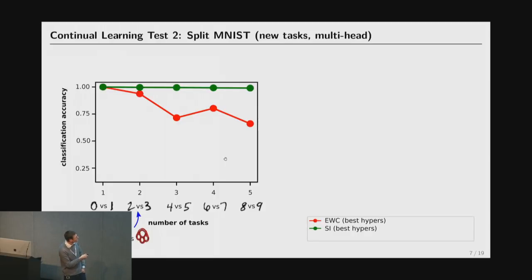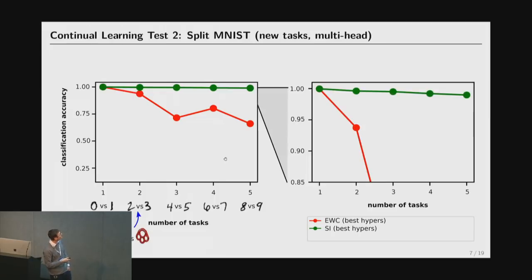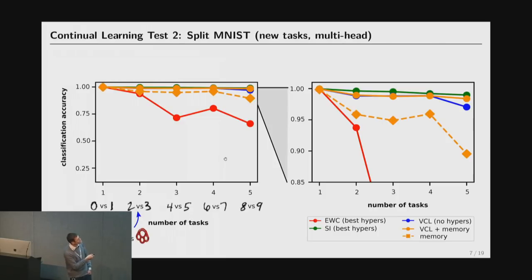Again, here is the elastic weight consolidation method and the synaptic intelligence. Synaptic intelligence is really good on this task, which is really interesting. It's quite an ad hoc method which comes from the neuroscience community. So one of the surprises is how well this does. EWC does not perform particularly well. I'm going to blow up this top region of this task versus classification accuracy plot so you can see the next methods. The variational continual learning does pretty well, not as good as synaptic intelligence and drops off towards the end, but still pretty good. If you add the memory, again, you can close the gap a little bit and this just shows you that the memory doesn't work particularly well by itself. So you need to combine it with this propagation.